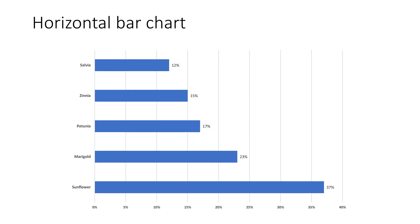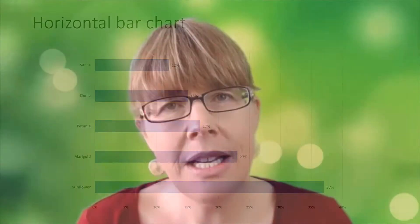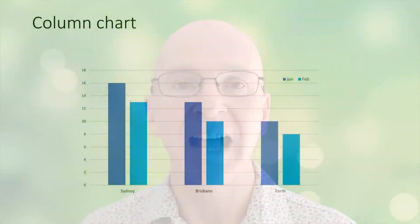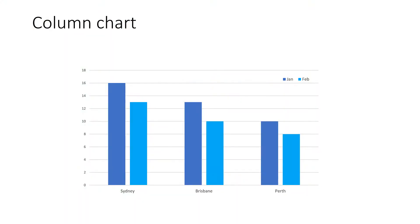Horizontal bar charts are good for showing small differences between values. The bars should be sorted from longest to shortest to help demonstrate the relative sizes. It's usually better to place the labels on one side and the percentage amounts on the other side. Column charts, or vertical bar charts, are useful for illustrating trends.